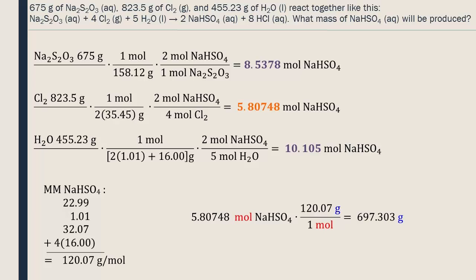To determine the number of significant digits, we have to look at how many significant digits the numbers in our calculation had. The question gave us the mass of Na2S2O3 with 3 significant digits, but this value was not actually used in the calculation of our final answer. The mass of chlorine had 4 significant digits, and the coefficients in the equation have an infinite number of significant digits. The uncertainty is on the last number of the two calculated masses, so the molar masses are at 4 and 5 significant digits. So we round our final answer to 4 significant digits. The reaction can produce 697.3 grams of NaHSO4.